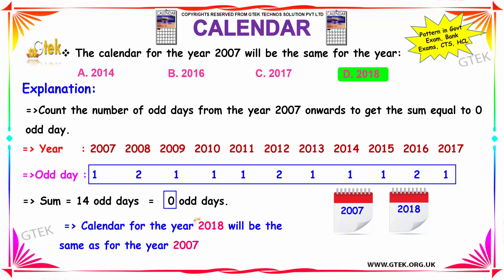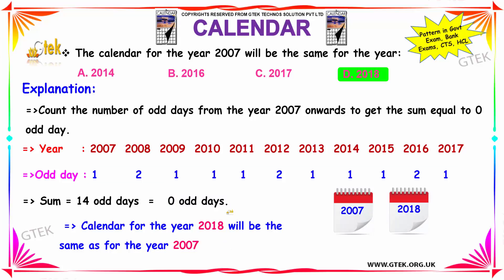So the calendar in the year 2018 will be the same as that of 2007, because by 2017 the cumulative number of odd days becomes zero, making 2018 repeat the same calendar as 2007. Hence the answer is 2018. These patterns of questions appear in government, bank, CTS, and HCL exams.